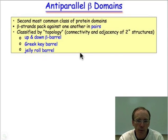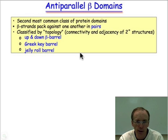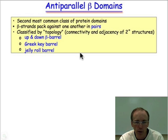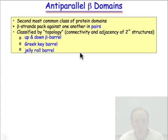We're going to look at the second most common type of protein domain — protein domains that consist only of beta strands. According to the connectivity and adjacency of these beta strands, there are really three different motifs that the beta strands can pack into: the beta barrel domain, the Greek key barrel, or the jelly roll barrel. These are all classified according to the topology diagrams.